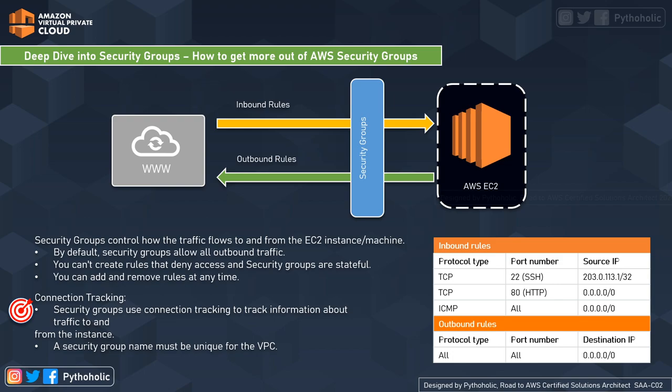Security groups use connection tracking to track information about traffic to and from the instances. Security rules are applied based on the connection state of the traffic to determine if traffic is allowed or denied. For example, if you ping an instance where ICMP is added to the inbound security group rule, that traffic is not tracked as a new request but is viewed as an established connection, even if the outbound security rule has not allowed ICMP.